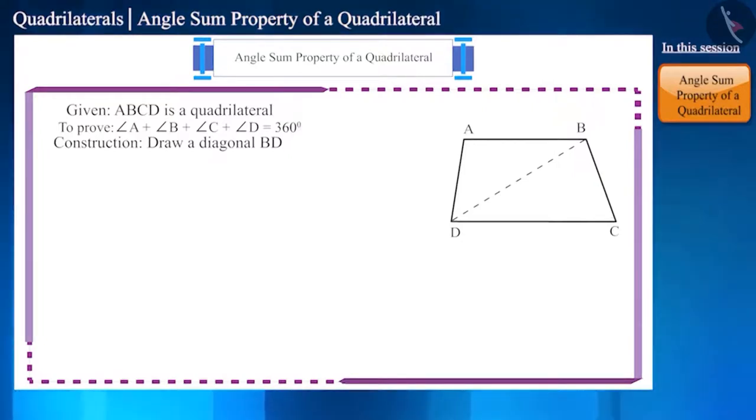Now, we have two triangles, triangle BCD and triangle DAB. In triangle BCD, angle CBD plus angle C plus angle CDB equals 180 degrees according to the angle sum property of a triangle.